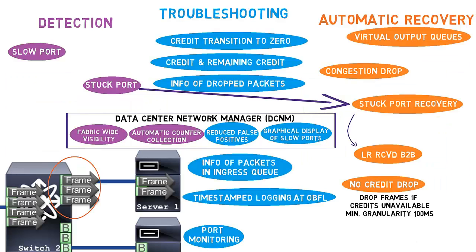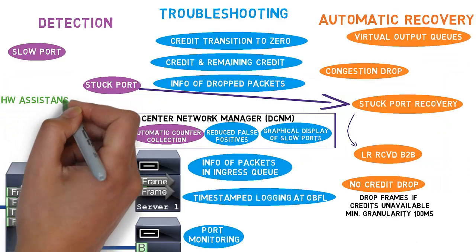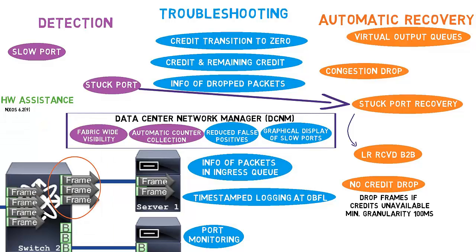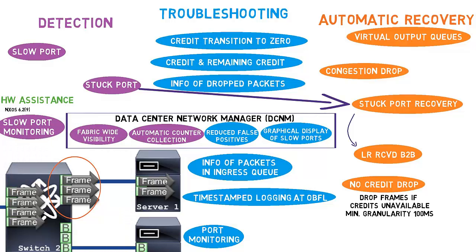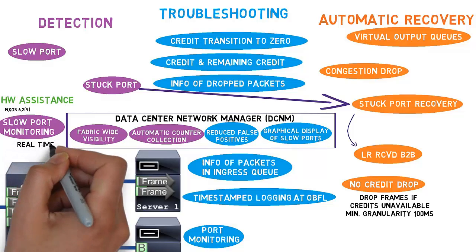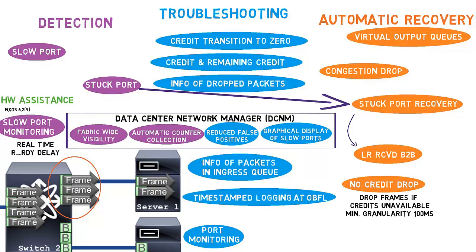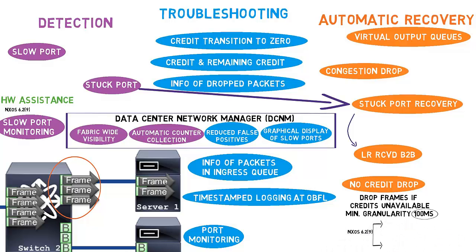From the 6.9 release of NX-OS on MDS 9700, MDS 9148S, and MDS 9250i, the Port ASIC has been enabled to provide hardware assistance. A new feature called slow port monitoring has been added that provides real-time delay of R_RDY on all the ports on the switches. Slow port monitoring is done in hardware without any additional load on CPU. Another benefit of hardware assistance is that the no credit drop minimum timeout has been reduced from 100ms to 1ms. Also, the granularity has been changed to 1ms.